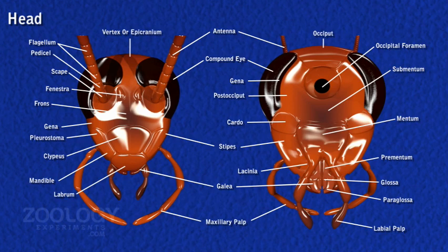The two lateral sides of the head below the compound eyes are formed by the genae. The head bears a number of jointed appendages: on each dorso-lateral side of the head is a large black compound eye. Just in front of each eye is a long, slender and multi-segmented antenna. Inner to the base of each antenna is a small, rounded and whitish area called fenestra, representing a simple eye.